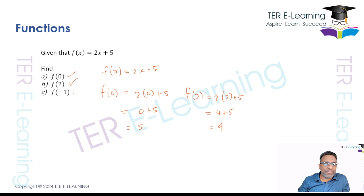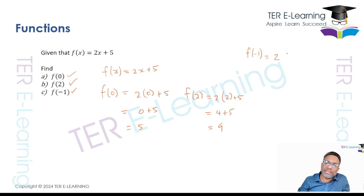That gives us 9, so that is the answer for part b. The last part — we want to work out f of minus 1. One thing you should pay attention to, especially with negative numbers, you need to be very careful. This is going to be 2 times minus 1 plus 5. 2 times minus 1 gives minus 2, plus 5 gives 3 as the answer. Simple examination question.